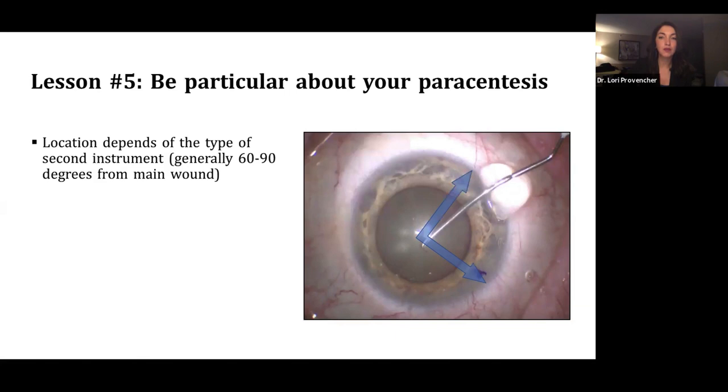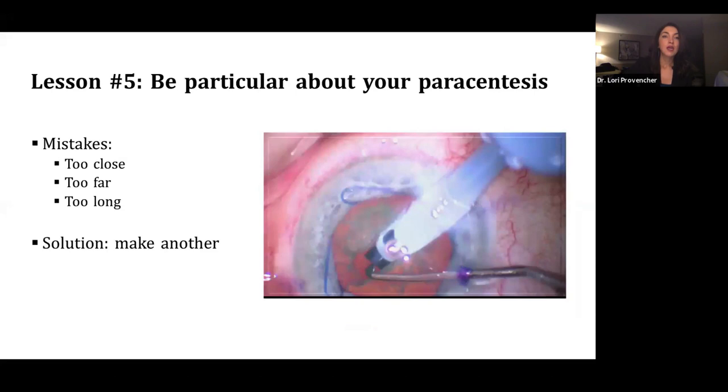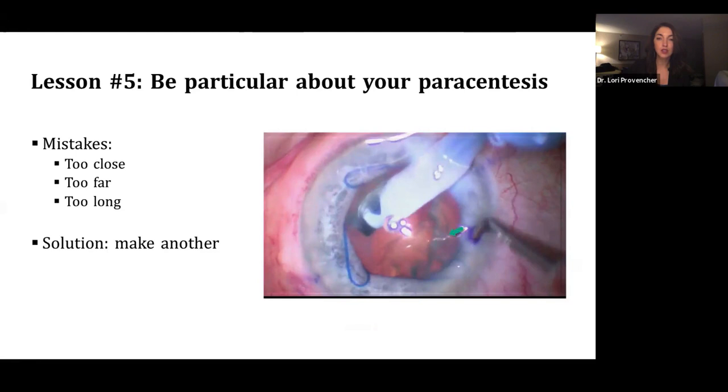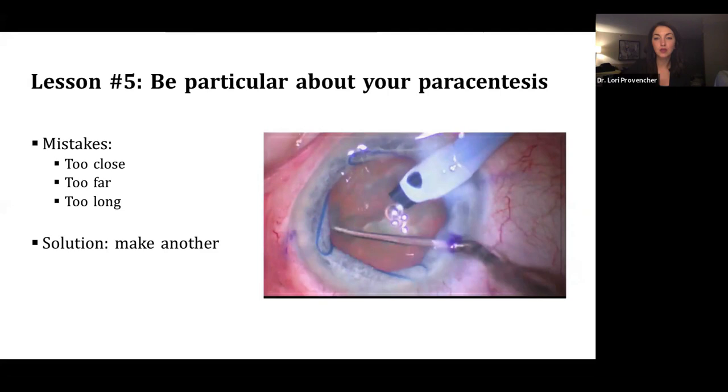So here's an arrow showing 90 degrees. You can see that my para in relation to my main wound here is about 60 degrees. And what I do at the start of the case is I kind of rest my hand where my main wound is going to go. And then I decide, I kind of back-calculate and put my para in relation to that. And so if your para is too close or too far from your main wound, you can run into a lot of funny issues.